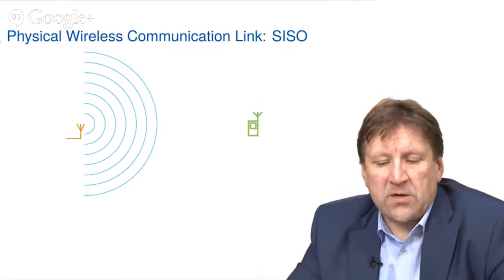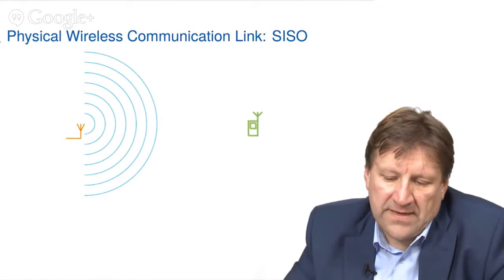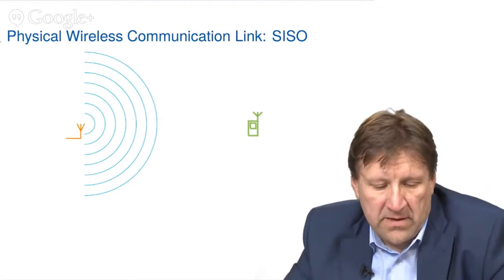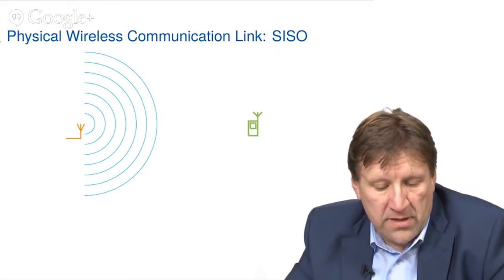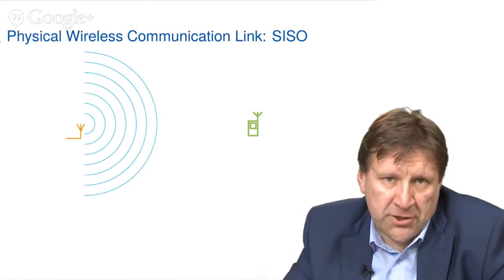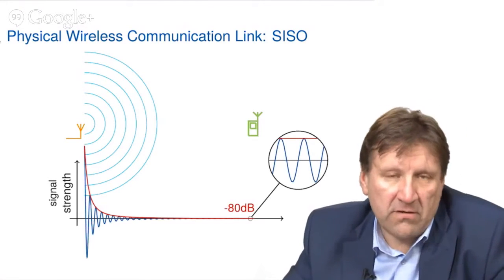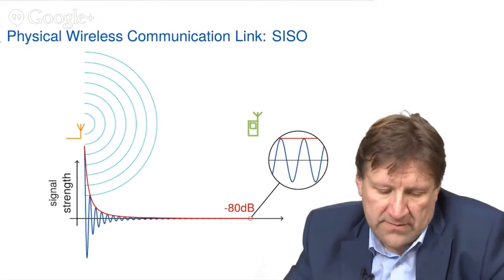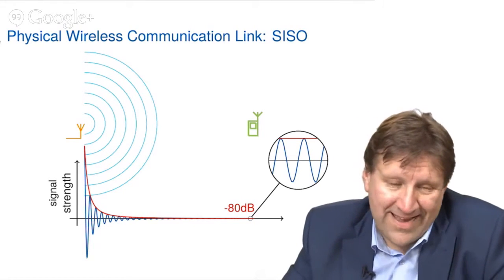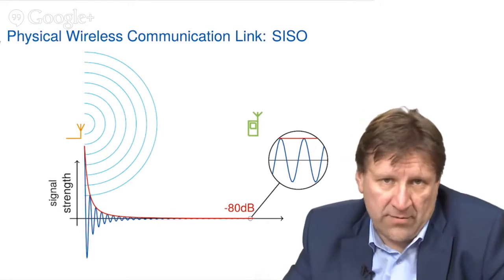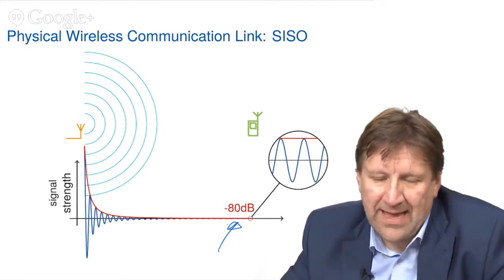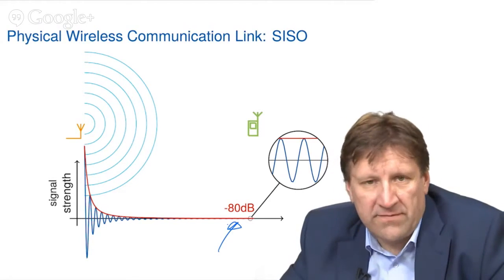Let's first start with the physical wireless communication link, the so-called SISO link. SISO stands for single input and single output. And this situation is illustrated here in this graph. Here we have one single antenna element at the transmitter, which is radiating electromagnetic wavefronts to the receiver on the right hand side. The main issue with the wireless medium is the attenuation of the signal strengths. So if the signal has to travel a couple of hundred meters or even kilometers from the transmitter to the receiver, the signal experiences a huge attenuation. This is about a factor of 100 million, which refers to an attenuation of 80 dB. That means that the signal at the receiver is very, very weak.